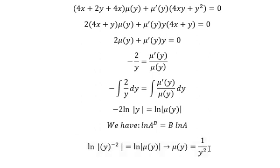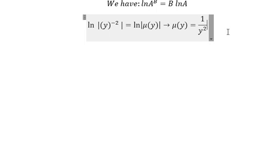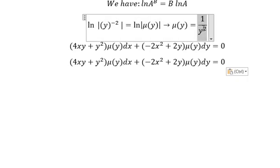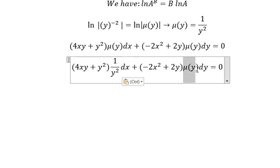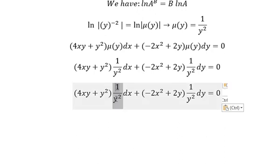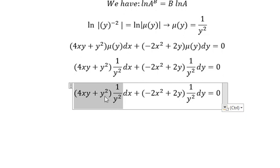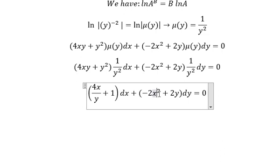That means we need to multiply both sides by this one. Now we need to go back in here. I will put this one in here, so we have for X over Y. This one we have number one. I will put in here, so we have like this.